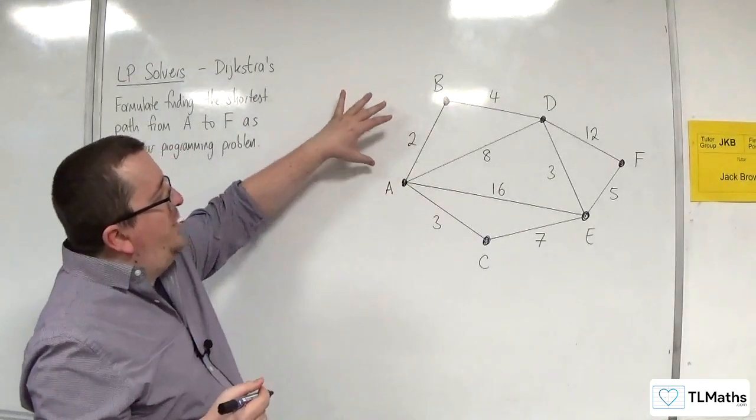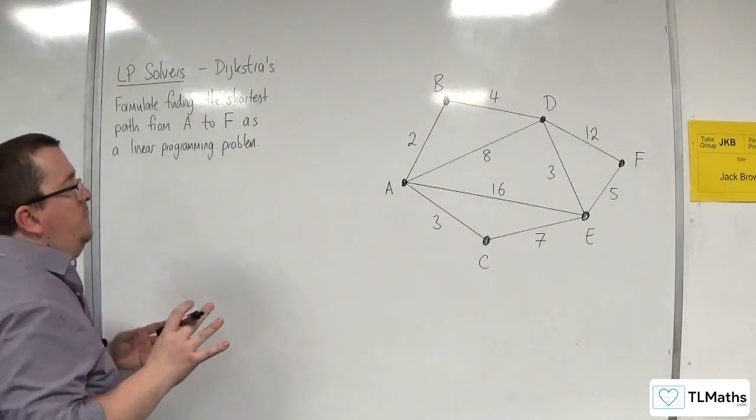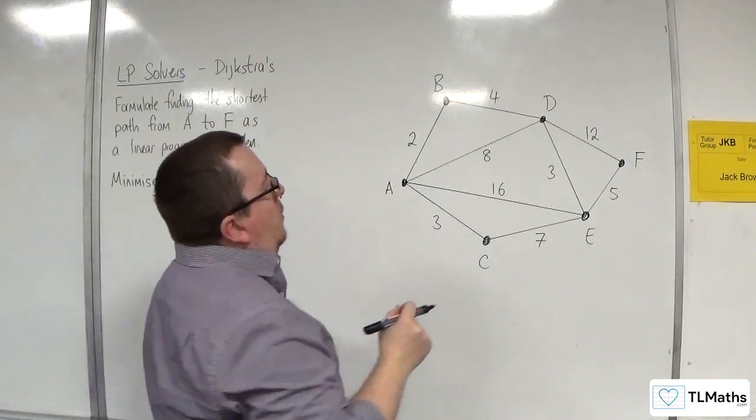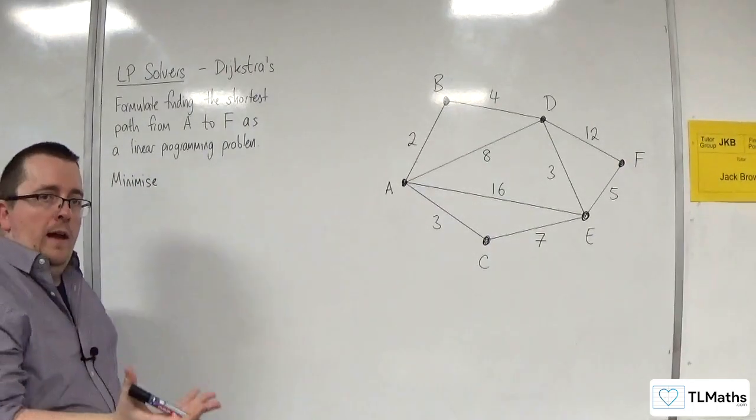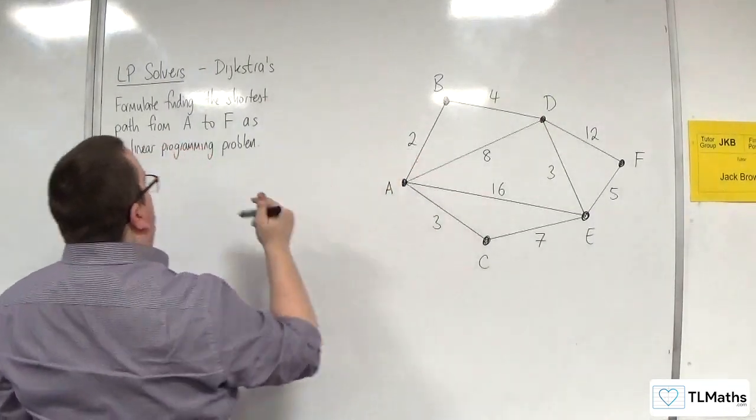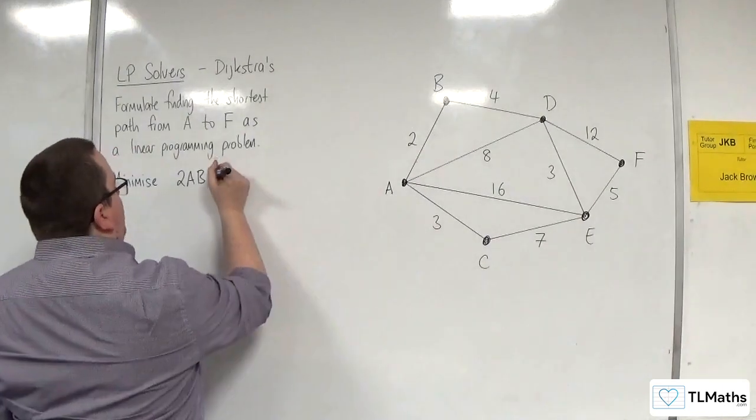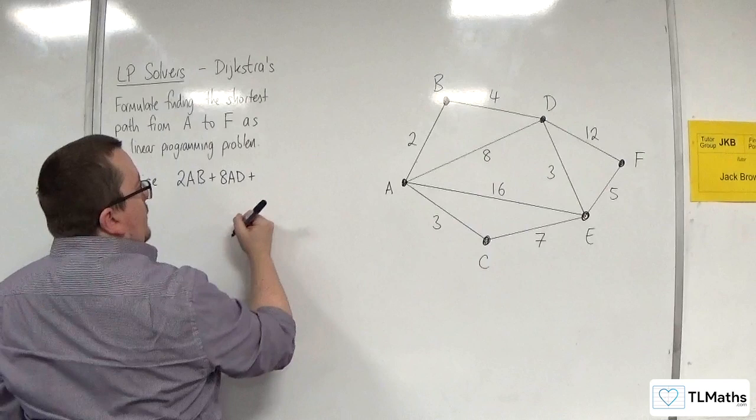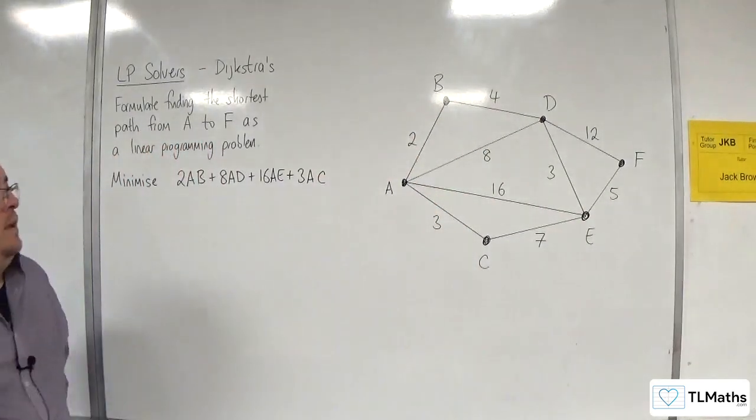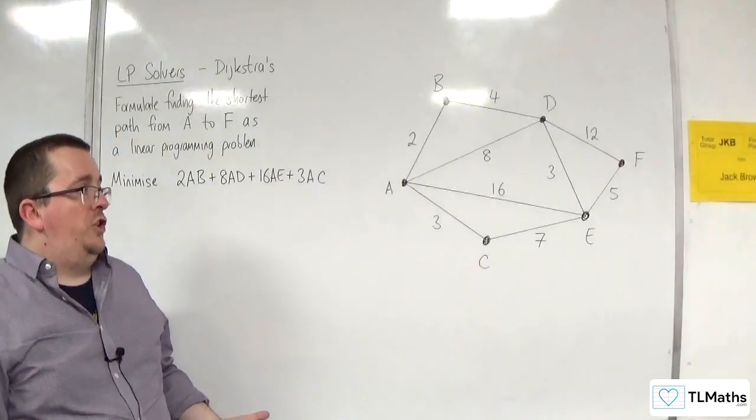First of all, remember that each of the edges AB, BD, they're either going to be zeros or ones, so indicator variables. We're starting off with minimize, and we're going to have to have all of the edges that could potentially be used called upon in the objective function. First of all, I'm going to go all the routes out of A. So 2 lots of AB, the weight times the indicator variable, then we've got 8 lots of AD, 16 lots of AE, and 3 lots of AC. So they're those four routes out. Now essentially, I'm not going to be including BA, DA, EA, and CA because they return me to the starting vertex.